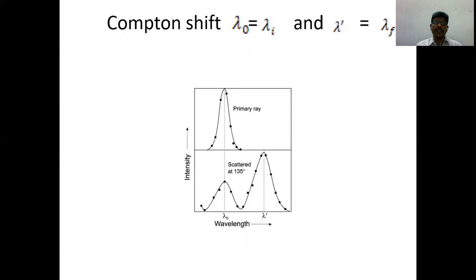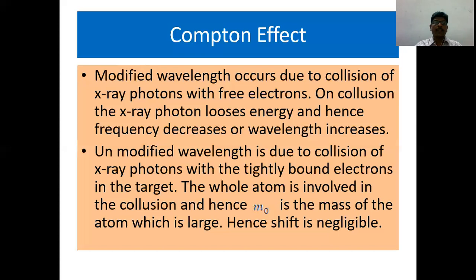In the graph, we can see that we have got an initial wavelength lambda I and a final wavelength lambda F. Lambda F, as you can see in the graph, is higher than lambda initial.